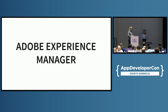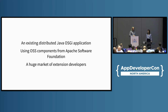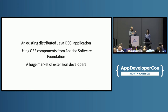A quick introduction about Adobe Experience Manager so you have a better understanding of why we took some decisions. It's an existing distributed Java OSGi application. There are a bunch of Java developers here, so you'll understand what it takes to move Java to Kubernetes or cloud native. It uses a lot of open source components from the ASF, and we contribute back to many open source projects we use. It also has a huge marketplace for extension developers who can write code on top of AEM, and that limits what we can do in terms of changing APIs or implementations.